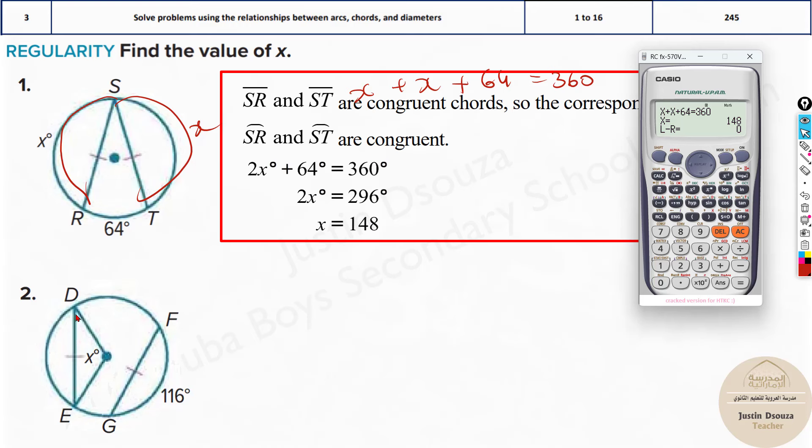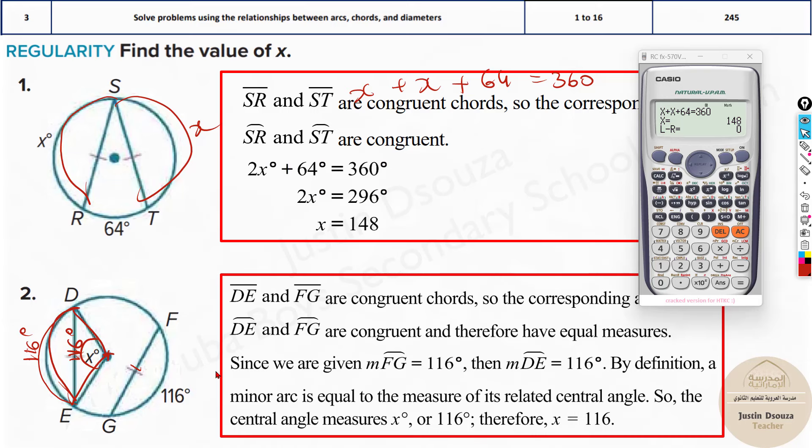Here they have told to find x. But they have not given us the measure of this angle or other angles. But we know these both are equal. That means this angle is also 116 degrees. Then since it's the central angle, the central angle is whatever the arc's angle. This arc is 116, that means this is also 116 degrees. So it's basically 116 degrees itself.